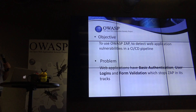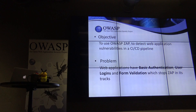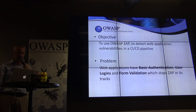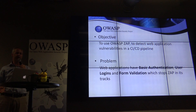The objective is to use ZAP as part of the pipeline, so once the web application gets built and deployed, we use ZAP to detect vulnerabilities. The problem is that ZAP is not magic, and many things can stop it in its tracks. Here are a few examples.